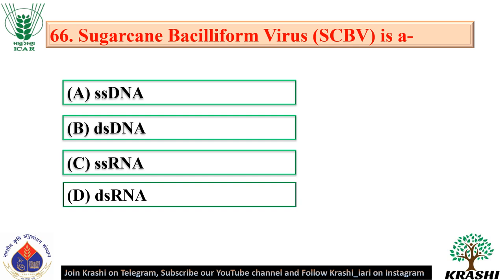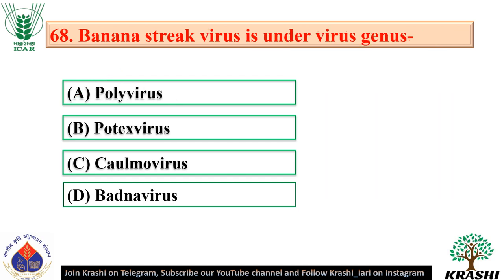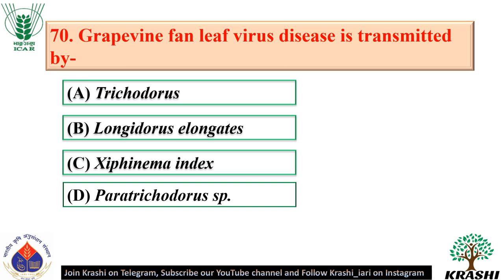Question number 66: Sugarcane bacilliform virus is a double-stranded DNA. Question number 67: Banana streak virus is transmitted by mealybugs, commonly Planococcus citri. Question number 68: Banana streak virus is under virus genus badna virus — option D. Question number 69: Cyanophages contain double-stranded linear DNA. Question number 70: Grapevine fan leaf virus disease is transmitted by the nematode Xiphinema index.